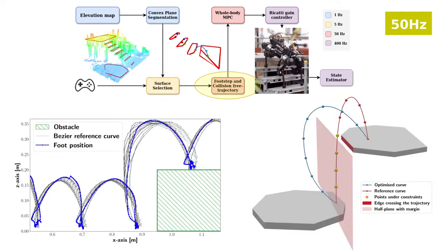Once the surface of contact has been attributed, the foot trajectory is continuously updated at 50 Hz. This is done via a quadratic program that deforms a reference polynomial curve while avoiding the edges of the object. As you can see on the left picture, the trajectory is pushed away from the obstacle.